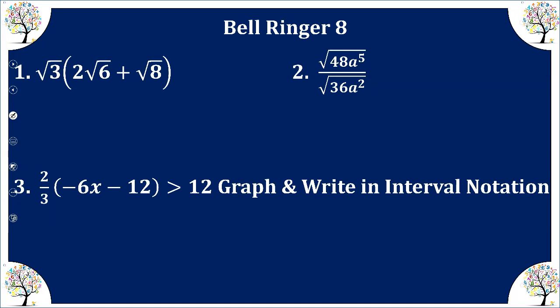Okay, number one, we are going to distribute radical 3. So we're going to multiply. We have an understood 1 times 2, and then 3 times 6 gives us 18, plus radical 24.